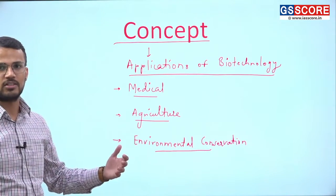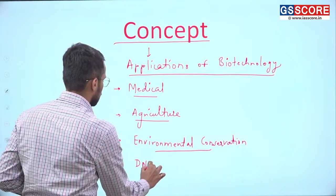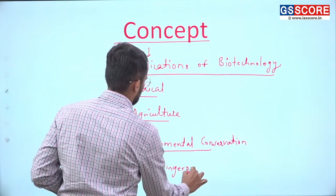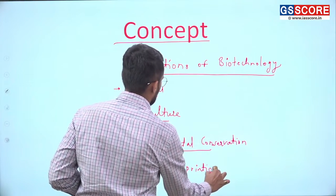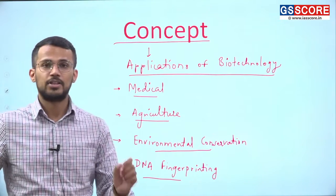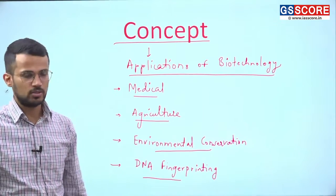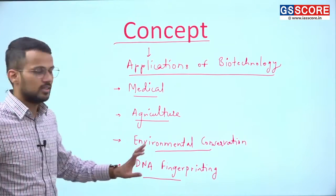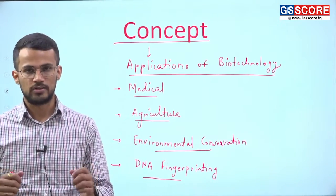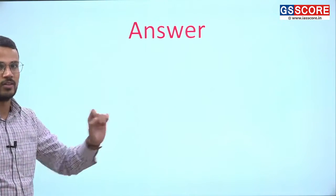There are various other sectors where biotechnology can be used as well. For example, it can be used in DNA fingerprinting for establishing maternity or paternity, as well as in criminal investigation — DNA fingerprinting has helped various investigating agencies investigate instances of crime. These different concepts related to biotechnology you should be aware of in order to address this particular question. Now let us discuss what the answer for this question will be.